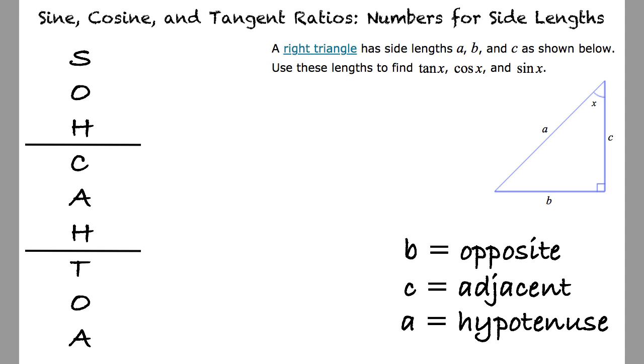Exactly. This means that our value for tangent of x is b over c, cosine of x is c over a, and sine of x is b over a.